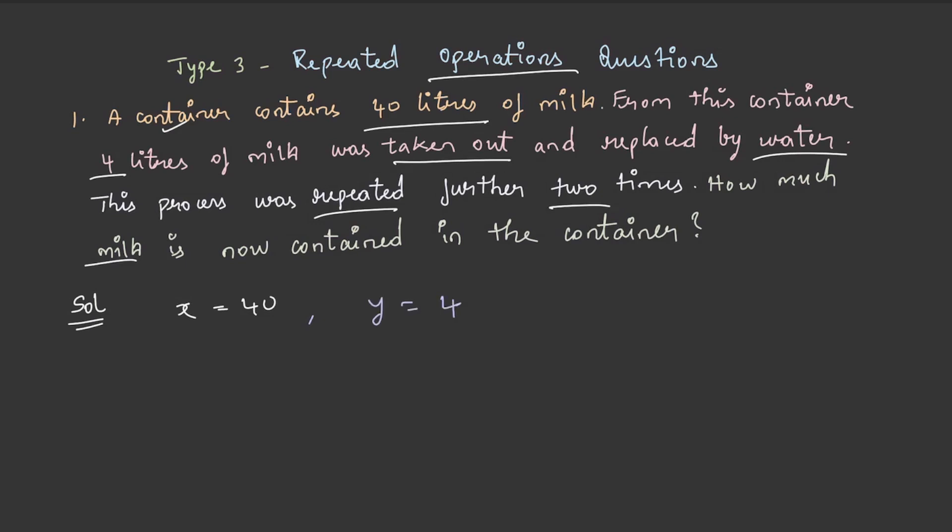The problem states this process was repeated further 2 times. This means it happened once initially and then 2 more times. Therefore, the number of operations is n = 3.